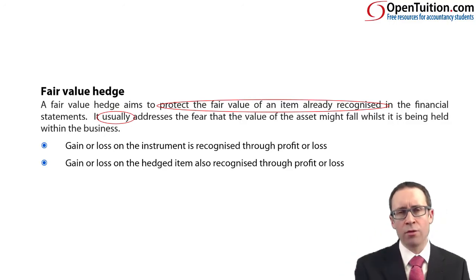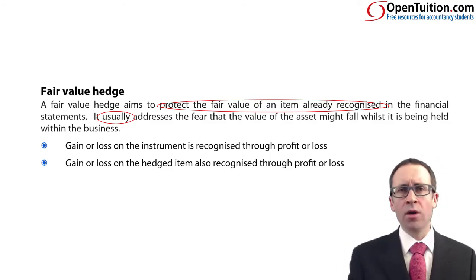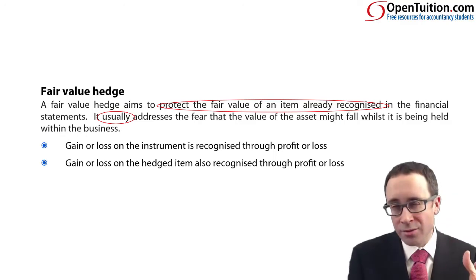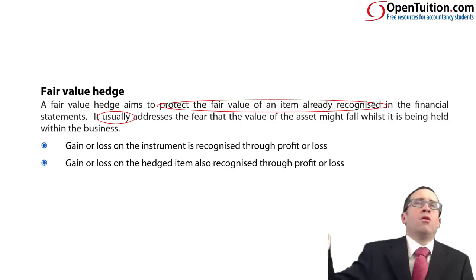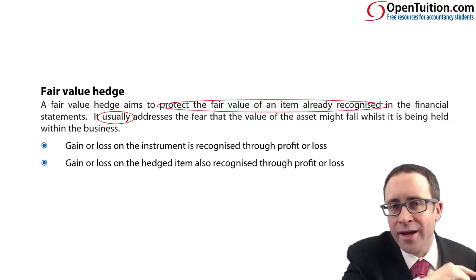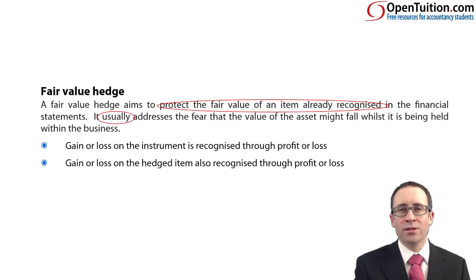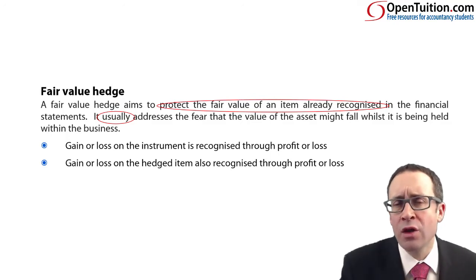Both go through profit or loss. What's the difference about that with your hedge accounting? Because on the derivative — that's the hedging instrument — that's what normally happens anyway. It goes through profit or loss. So what's the big difference? The difference is on the item. It doesn't matter how you treat it normally.